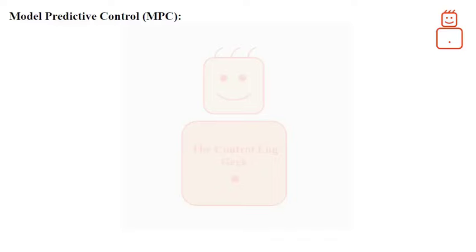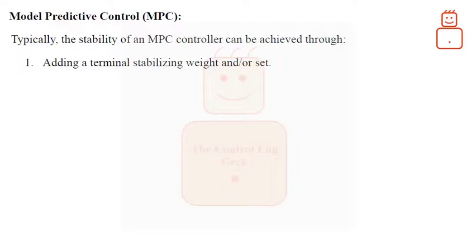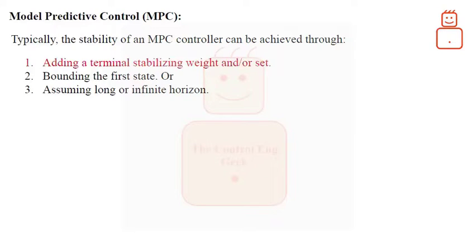Let me now introduce you to the typical methods utilized for stabilizing an MPC problem. Typically, the stability of an MPC controller can be achieved through: adding a terminal stabilizing weight and or set, bounding the first state, or assuming long or infinite horizon. In this video, we are focusing on the first method, that is adding a terminal stabilizing weight.